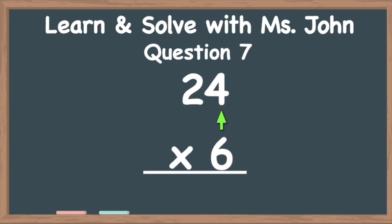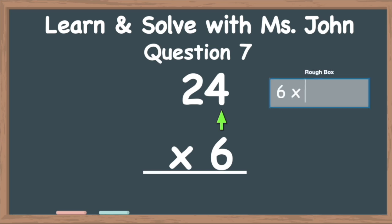Let's begin. First, let's draw a rough box. In this rough box, we're going to write six times four. Six times four equals twenty-four. Because it's a two-digit answer and we still have some multiplying to do, we're going to move the four down to the ones column of the answer section, and we're going to carry that two over to the tens column with the two.